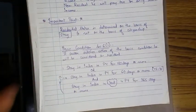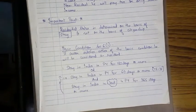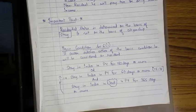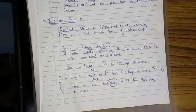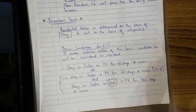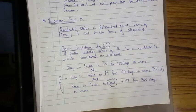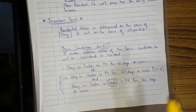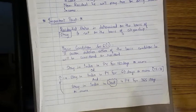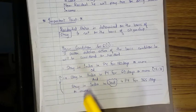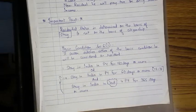Important point: residential status is determined on the basis of stay and not on the basis of citizenship. A person may have two or more citizenships, but residency is determined by where he stays. A person can stay at only one place at a time, so residential status is determined on the basis of stay, not citizenship.